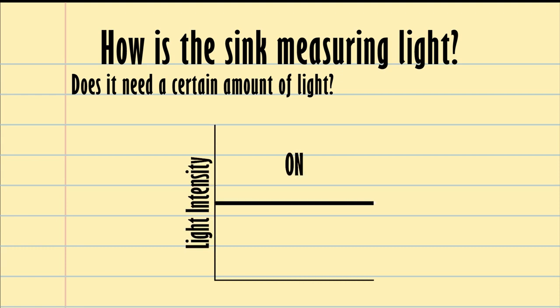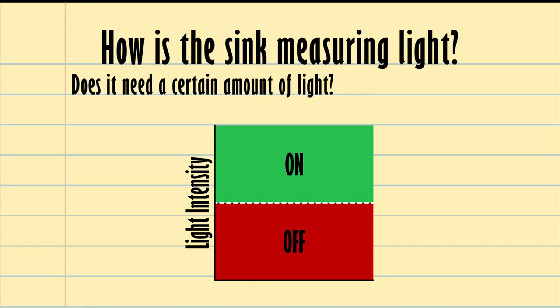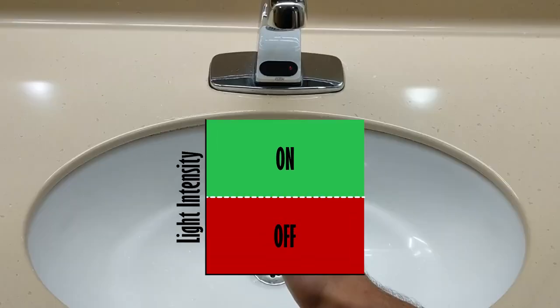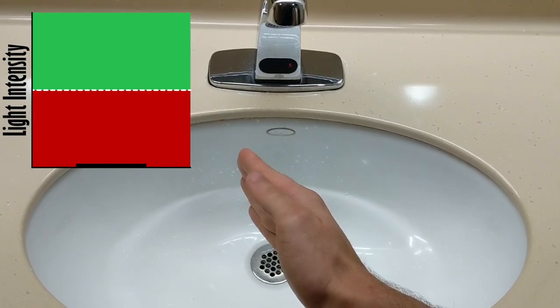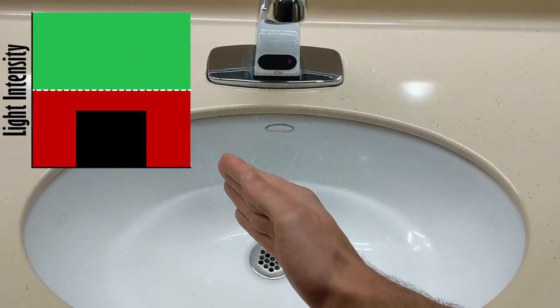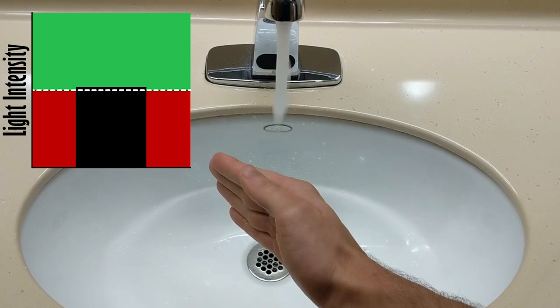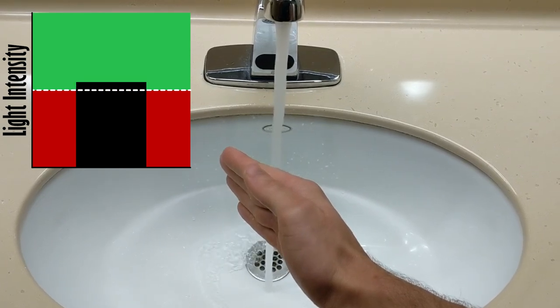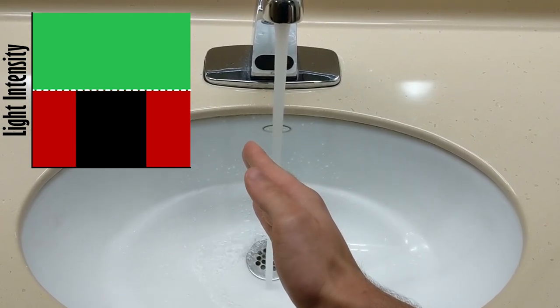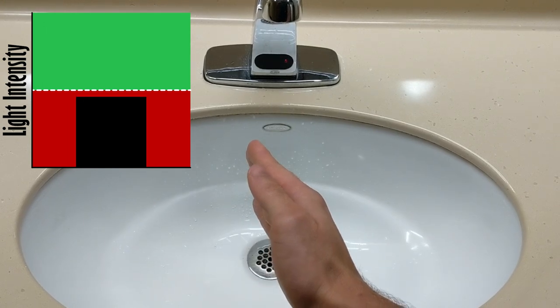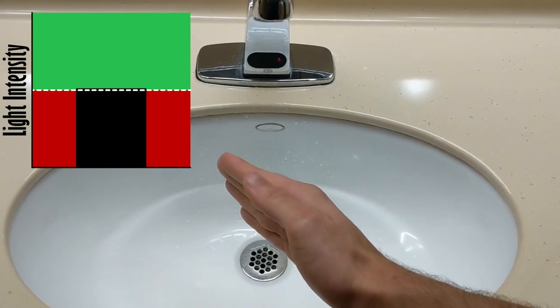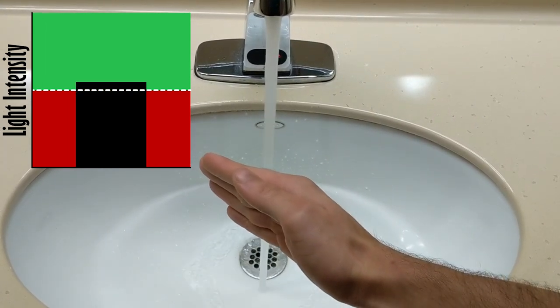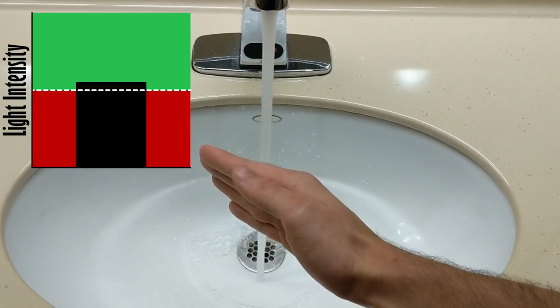Above this level, the sink turns on, but below this level, the sink stays off. To test this, I tilted my hand from side to side, imagining that I was deflecting the infrared beam from the sink and changing the amount of light getting back to the sensor. I could rotate my hand to get just below that threshold, and then rotate my hand back the other direction to reflect just enough light to turn it back on.